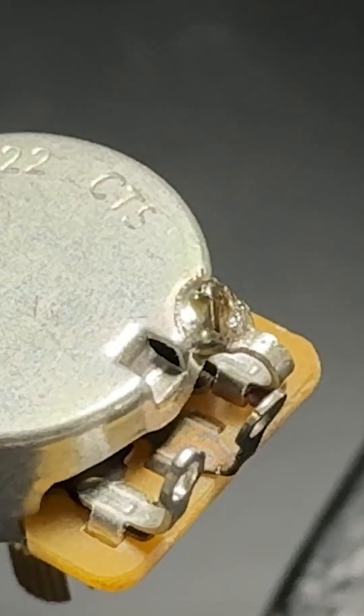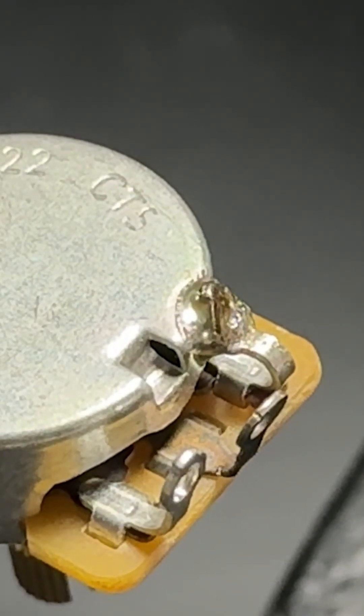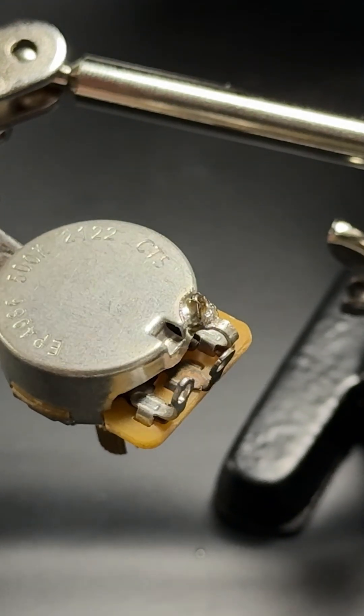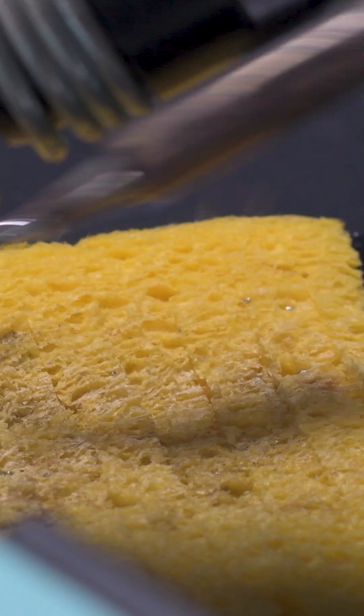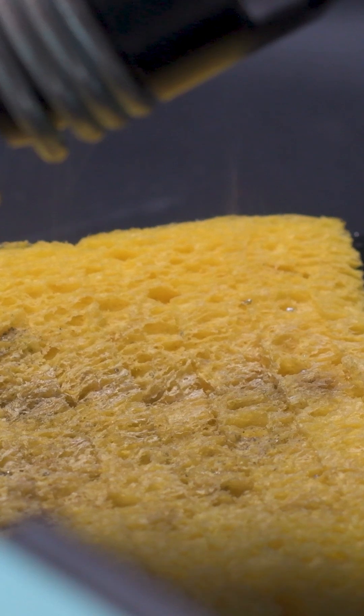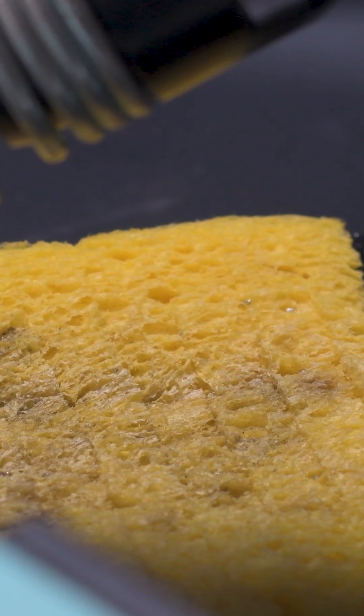Here we have it. That lug is now completely soldered to the casing. Always remember to clean off your tip after every joint and to reapply the solder. Let me make sure you can see it from all sides.